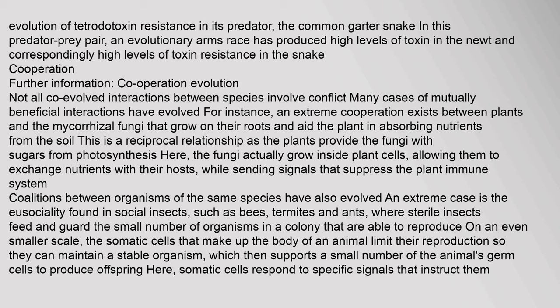Cooperation: Not all co-evolved interactions between species involve conflict. Many cases of mutually beneficial interactions have evolved. For instance, an extreme cooperation exists between plants and the mycorrhizal fungi that grow on their roots and aid the plant in absorbing nutrients from the soil — a reciprocal relationship as the plants provide the fungi with sugars from photosynthesis. The fungi actually grow inside plant cells, allowing them to exchange nutrients with their hosts while sending signals that suppress the plant immune system. Coalitions between organisms of the same species have also evolved.